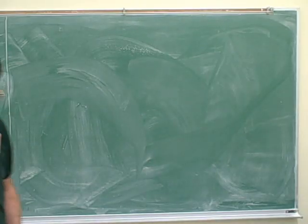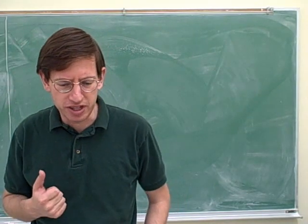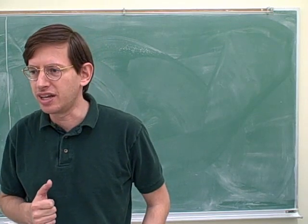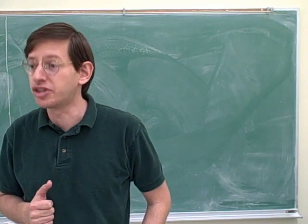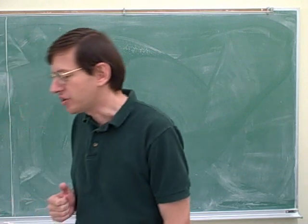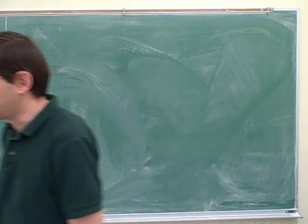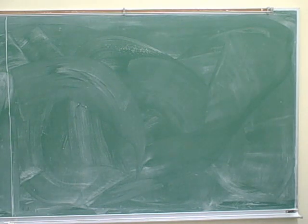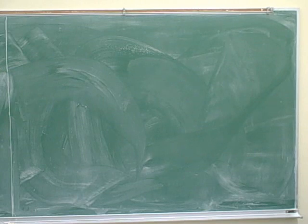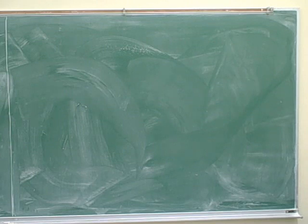We're going to start by deciding what the difference is between a transverse and a longitudinal wave. That's an important idea. First of all, we can understand what the difference is in words, and then I can try to paint you a mental picture so we can have an example of each of those. So in a transverse wave, the oscillations are perpendicular to the direction of propagation of the wave.